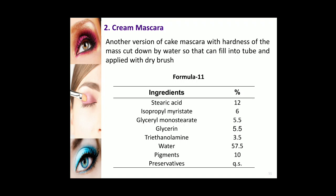Next are cream-based mascaras. This type of mascara has the hardness of the base cut down by water so that it can be filled into a tube and applied with a dry brush. Cream-based mascara is an emulsion prepared using oils, waxes, fatty acids, emulsifiers, water soluble gums, water, and any suitable colour.